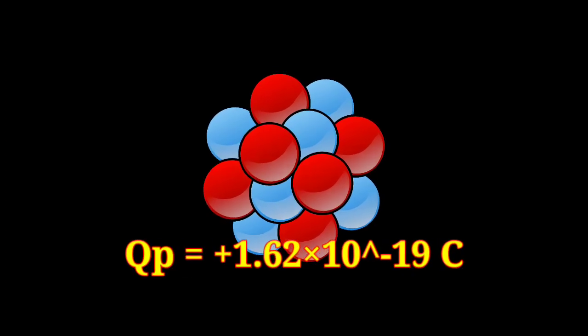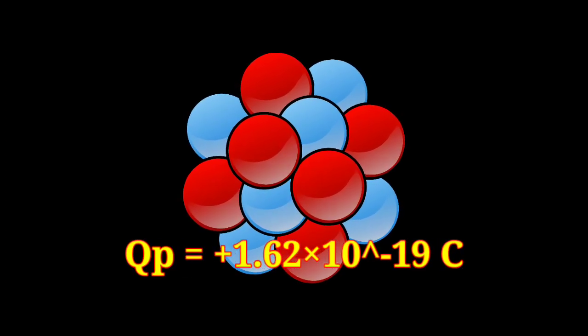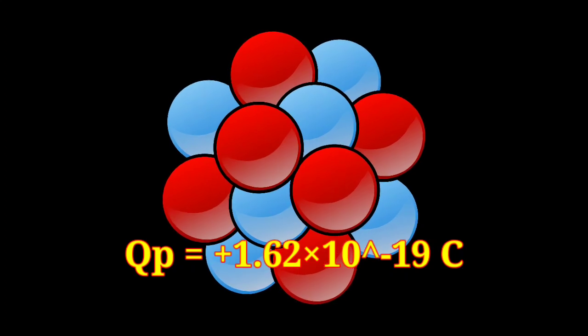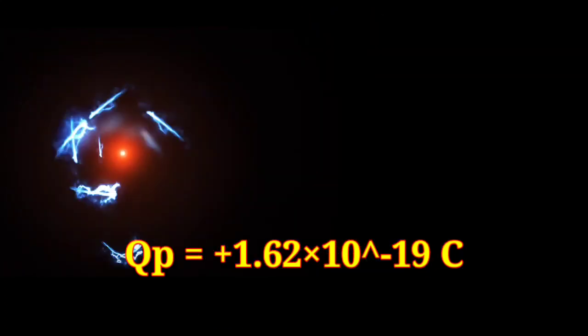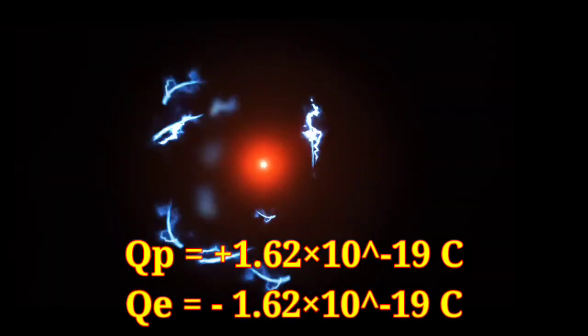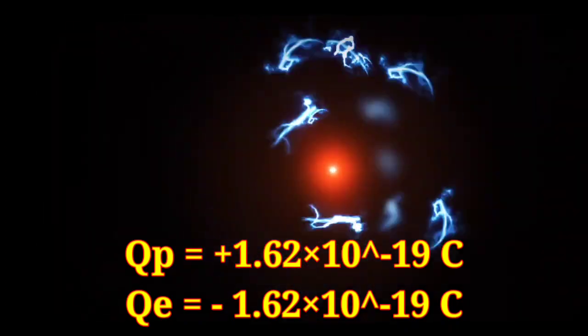The third critical event in our list is the formation of particles with precise properties. For example, the electrical charge of a proton is 1.62 times 10 to minus 19 coulombs. This may seem a random value when considered alone. However, an amazing precision is observed when it is compared to electrons.